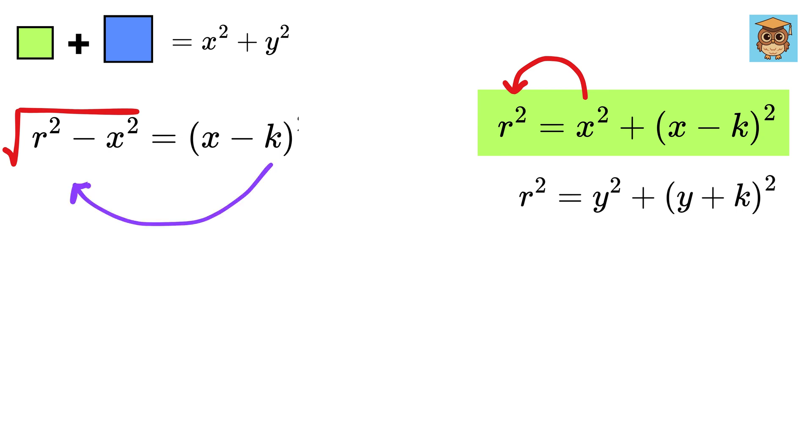Take K on the left-hand side and this part on the right-hand side to get K equals x minus square root of R squared minus x squared.